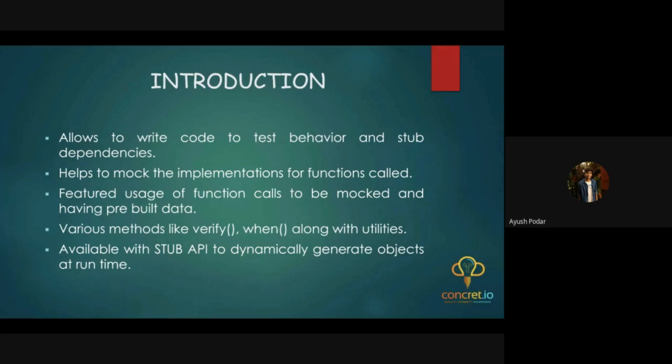As an introduction, fflib Apex Mocking is basically a test behavior framework for Apex code. It helps us stub dependencies and mock the definitions as well as implementations of functions called. Its major functionality is that if you have objects or data in your database, mocking prevents that data from being inserted into a database and allows you to use it via ID without it actually being inserted.